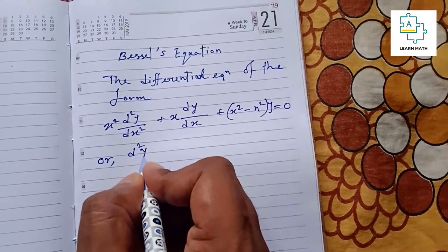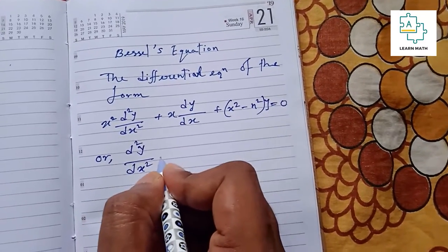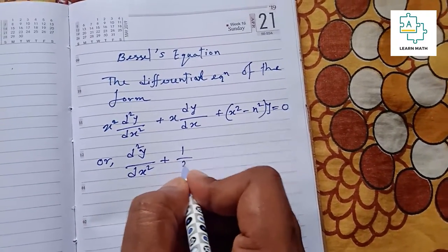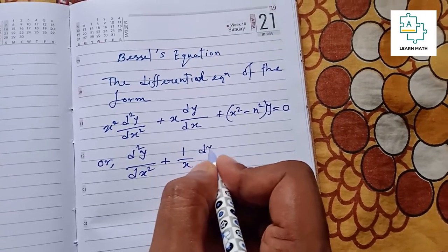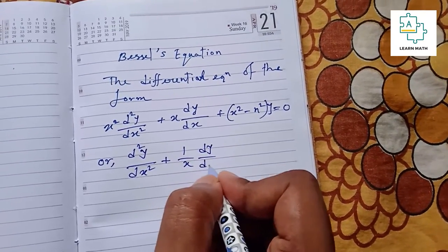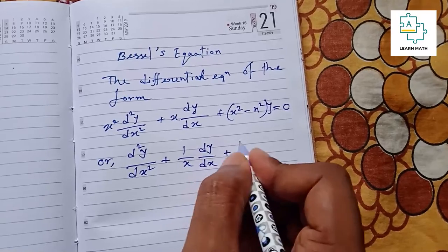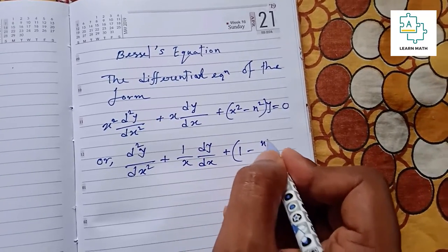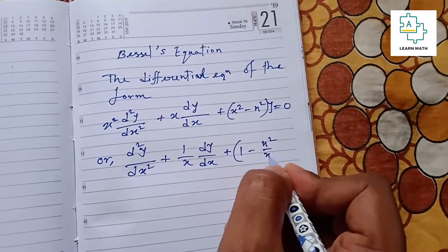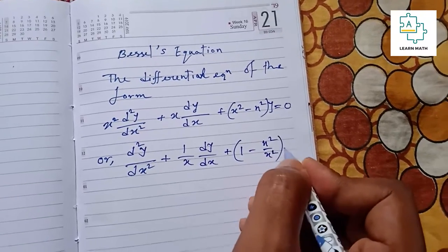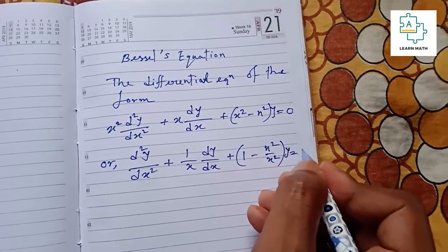d²y/dx² plus (1/x) dy/dx plus (1 - n²/x²)y equals 0